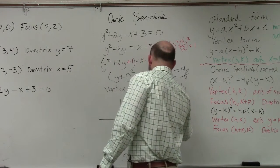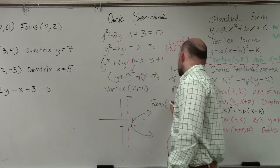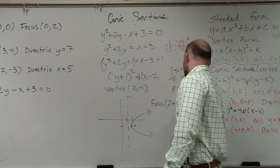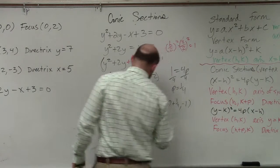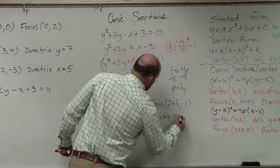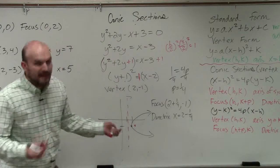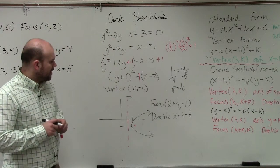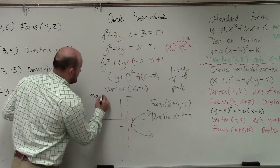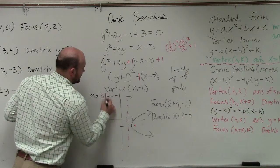So our focus is going to be 2 plus 1 fourth minus 1. And my directrix is going to be x equals 2 minus 1 fourth. Now obviously, if I'm asking all these points value, my axis of symmetry is going to be y equals negative 1. That's pretty easy.